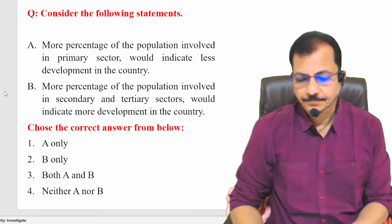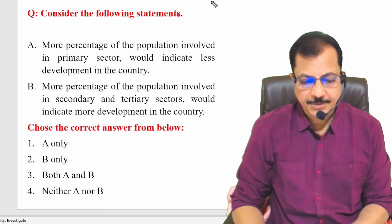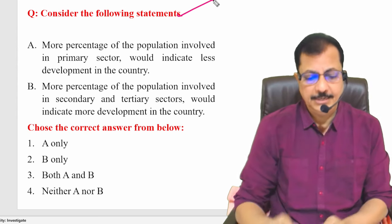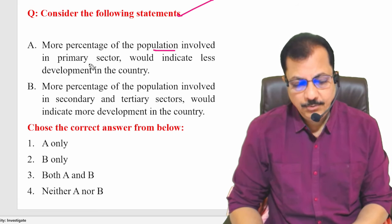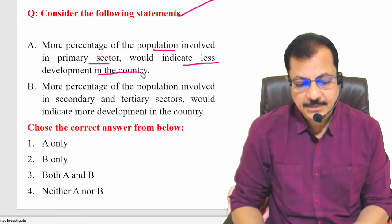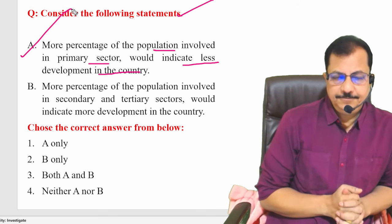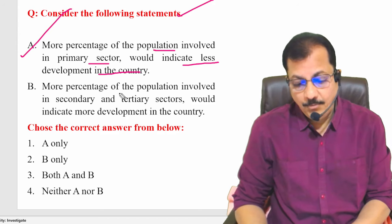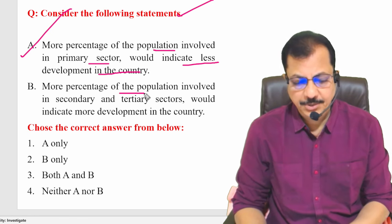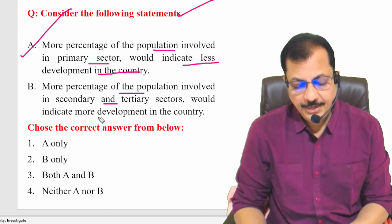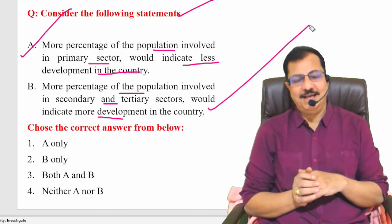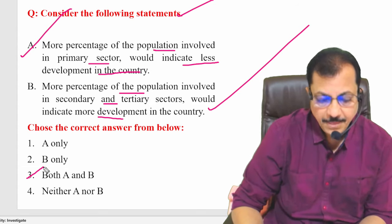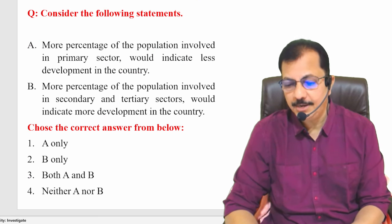Final question — consider two statements: Statement A — more percent of the population involved in primary sector would indicate less development in the country. Statement B — more percentage of the population involved in secondary and tertiary sectors would indicate more development in the country. Both statements are correct — there is a change in occupational structure leading to economic development, so the answer is both A and B are correct.